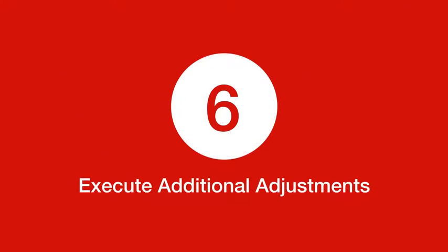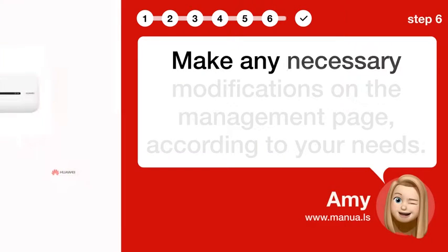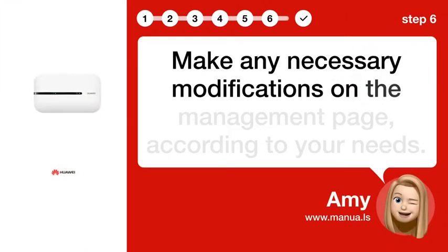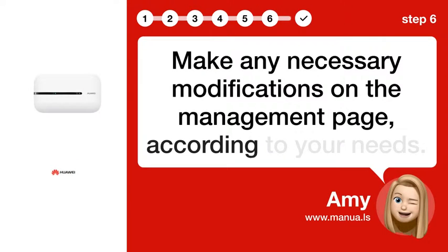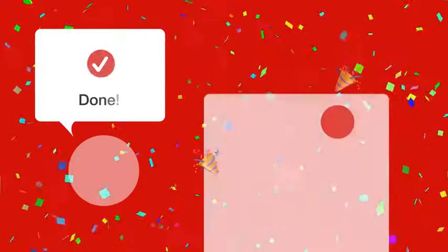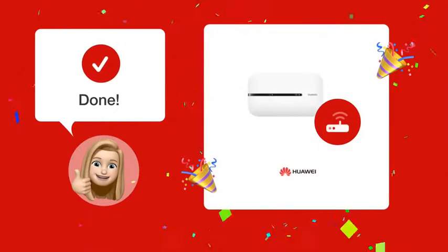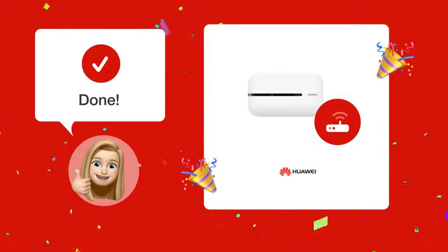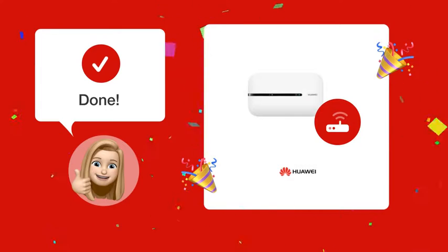Step 6: Execute additional adjustments. Make any necessary modifications on the management page according to your needs. Now, having followed these simple steps, you should be able to access your Huawei router's web-based management page without any problem.